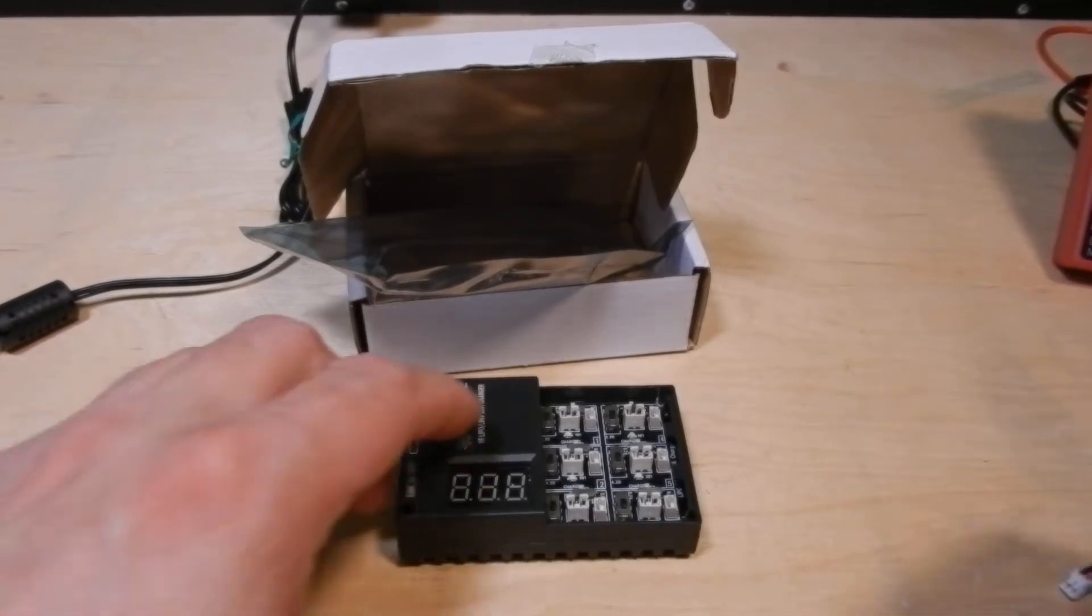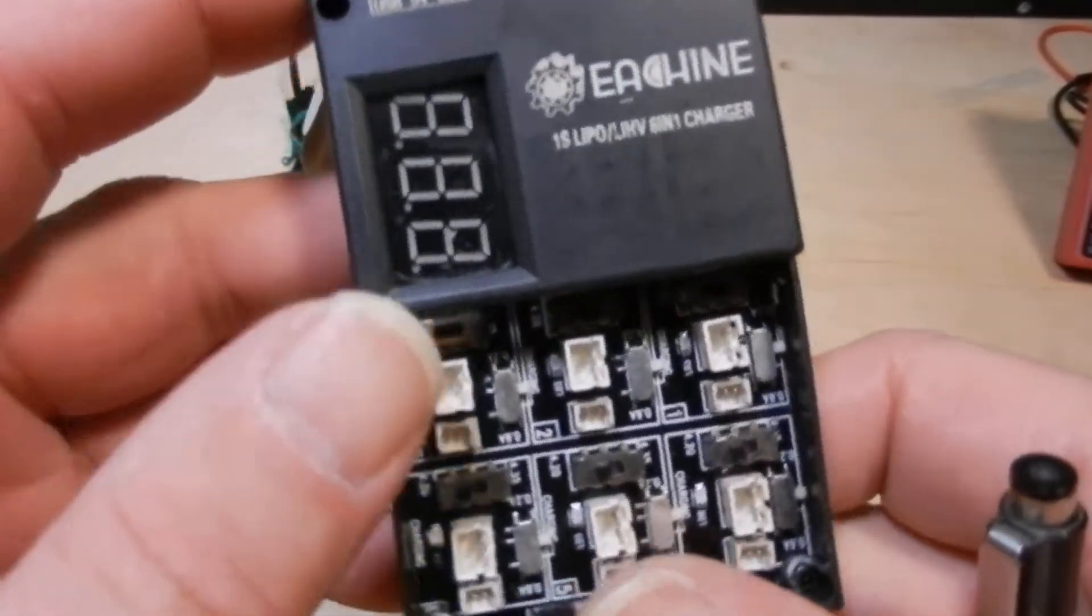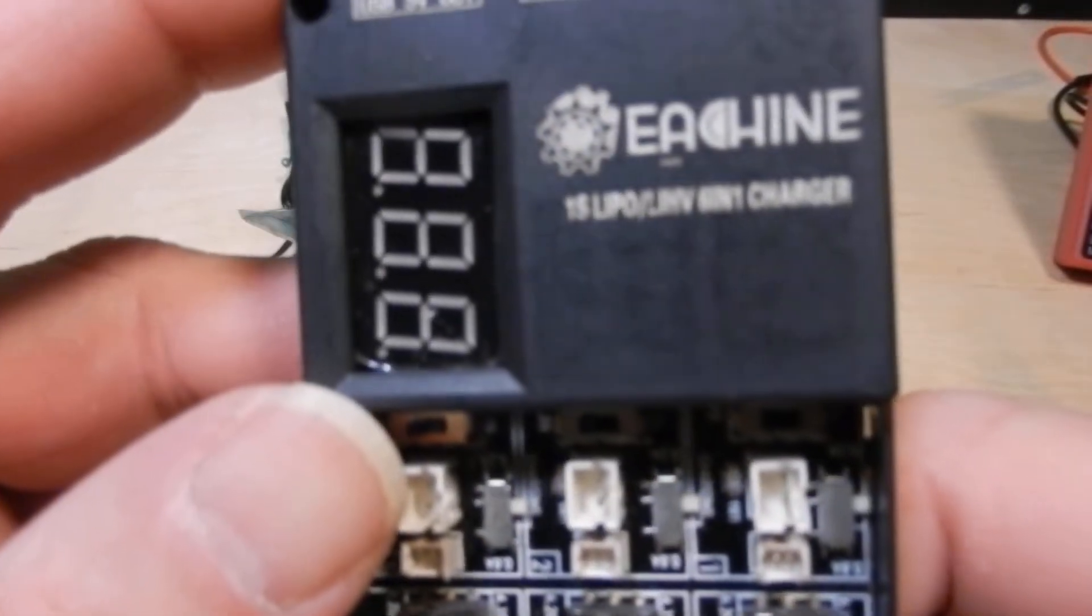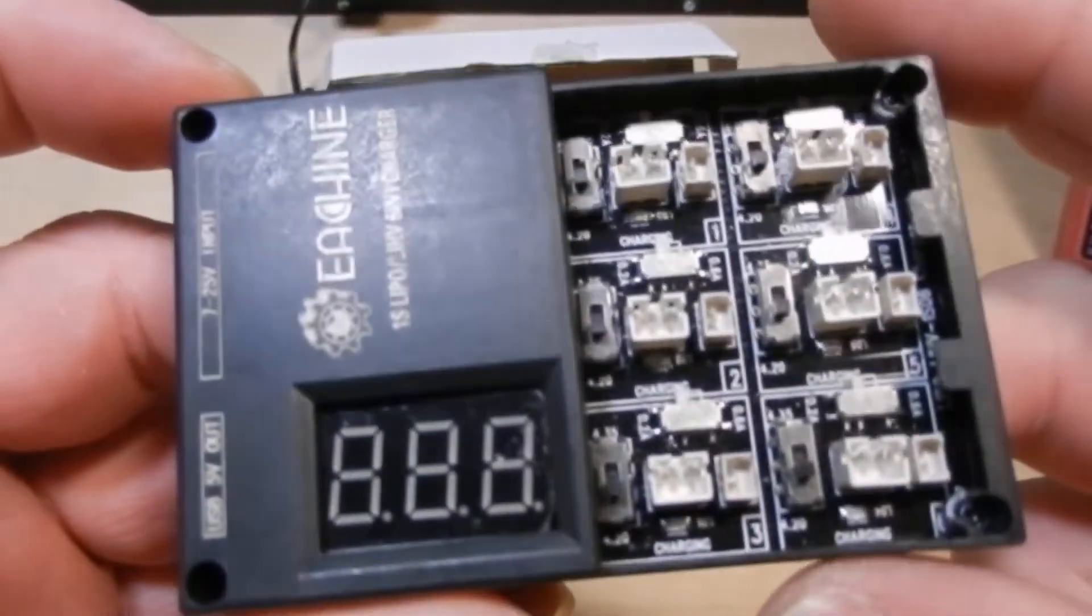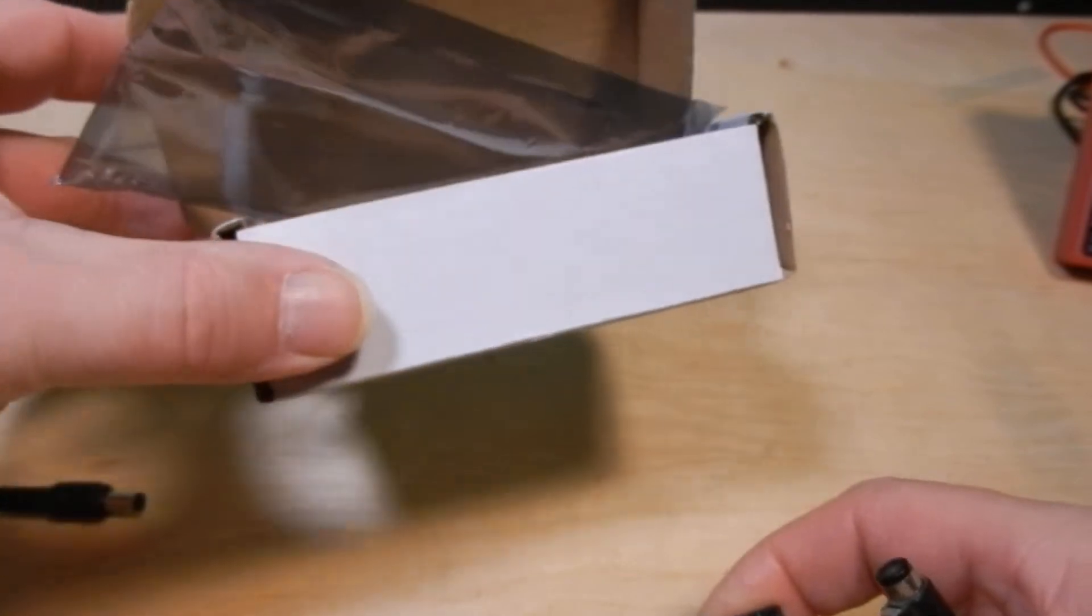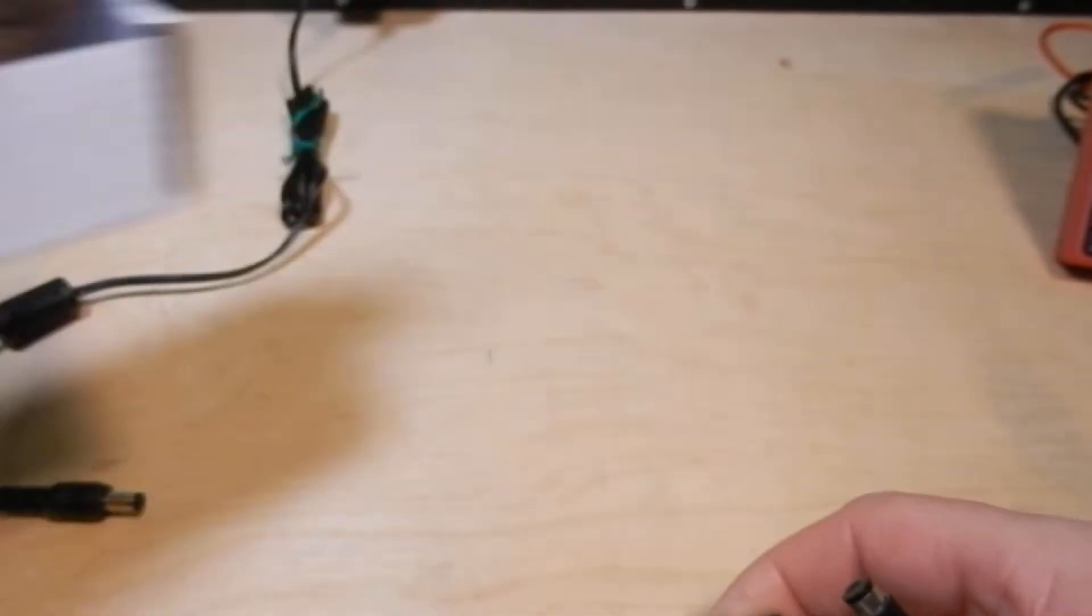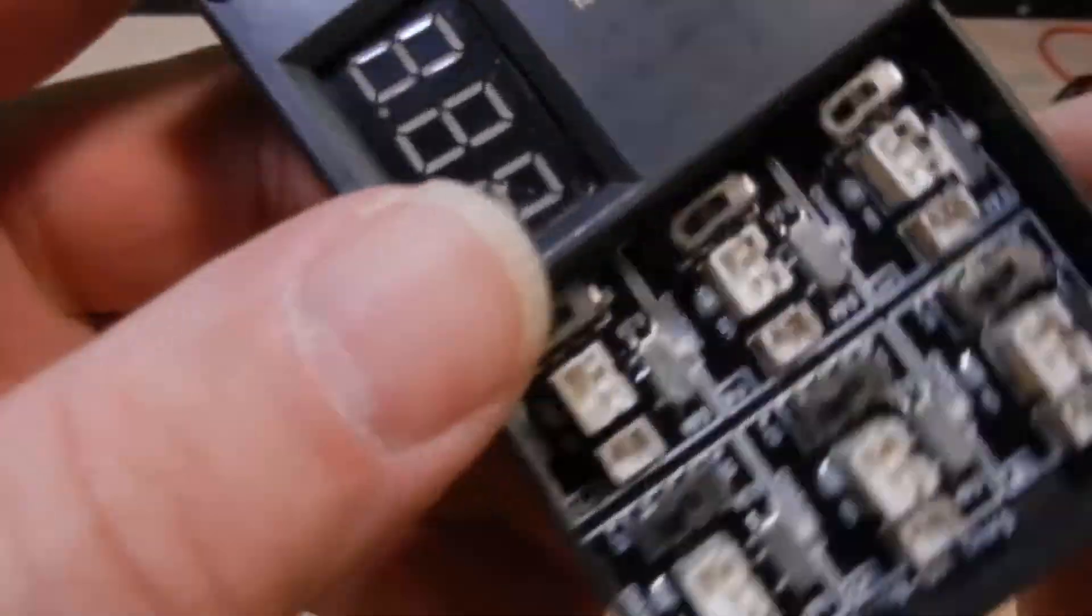Hello YouTube, today I have for you the EA Sheen 1S LiPo LIHV 6-in-1 Charger. It comes in a little box like this in an anti-static bag and I'm going to set that aside. So here we go with what we got here.